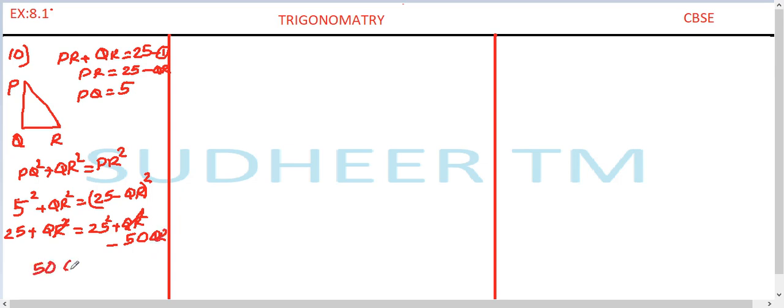Taking minus 50 QR to the left, so it becomes 50 QR is equal to 625 minus 25. So, 50 QR is equal to 600, which gives QR is equal to 600 divided by 50, which is 12. So, we found QR is equal to 12.